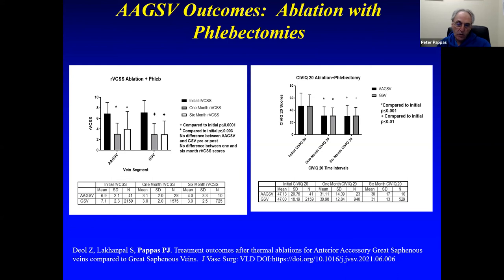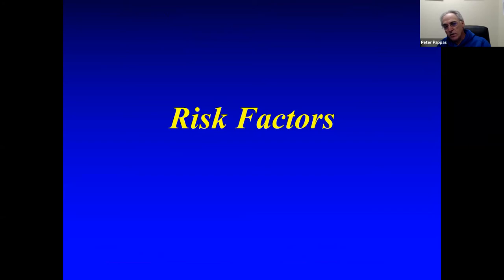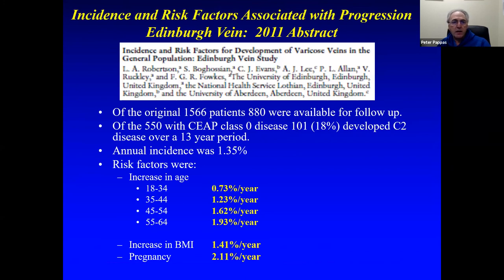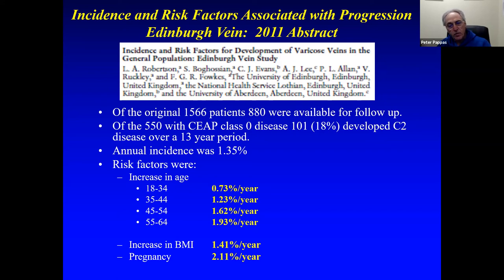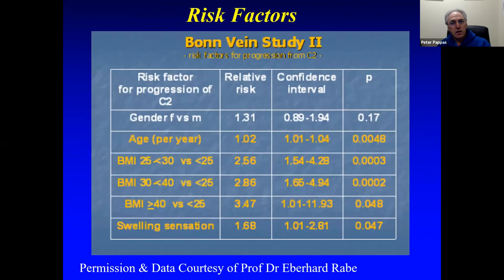What are the risk factors associated with disease progression? Going back to the Edinburgh study, an abstract published years after the original paper found that increasing age, BMI, and pregnancy are all associated with disease progression. The Bonn Vein 2 study found the same things, and additionally found that a sensation of swelling — interpreted as tightness or tenseness — was associated with higher odds of progression.